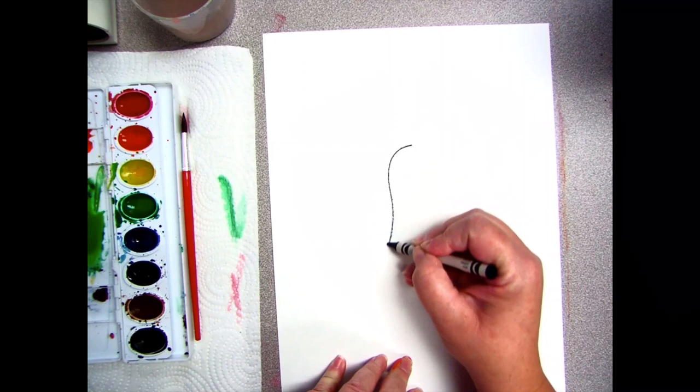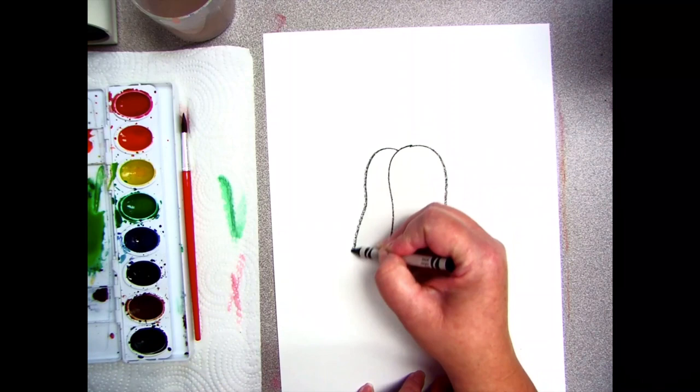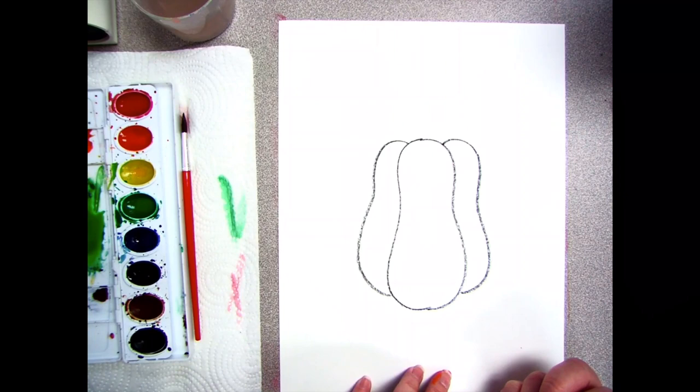Take your time. Start with this funny peanut shape and then add shapes on each side. When drawing the stem, start at the pumpkin and go up, then go to the other side and do the same.